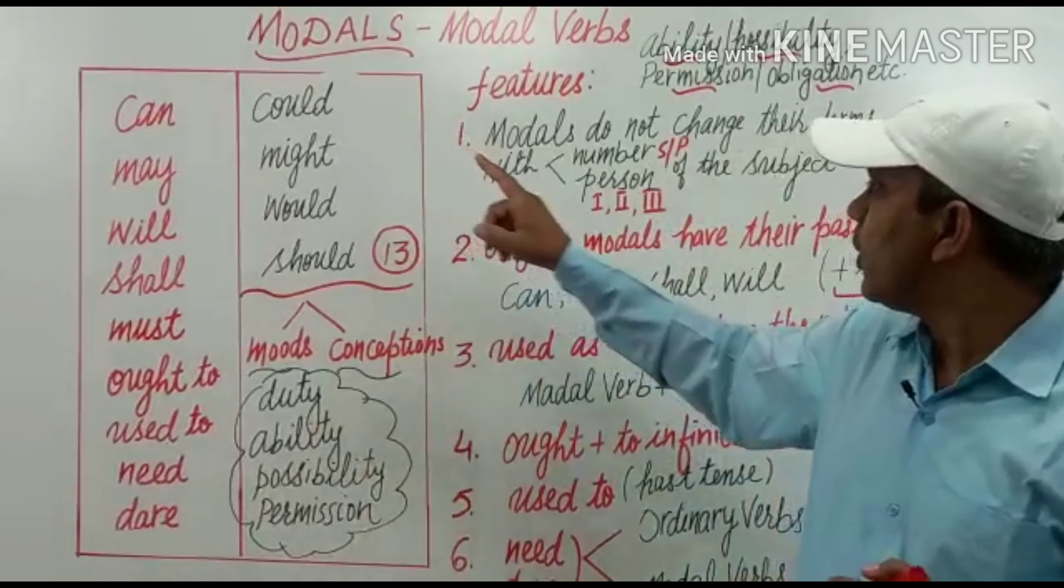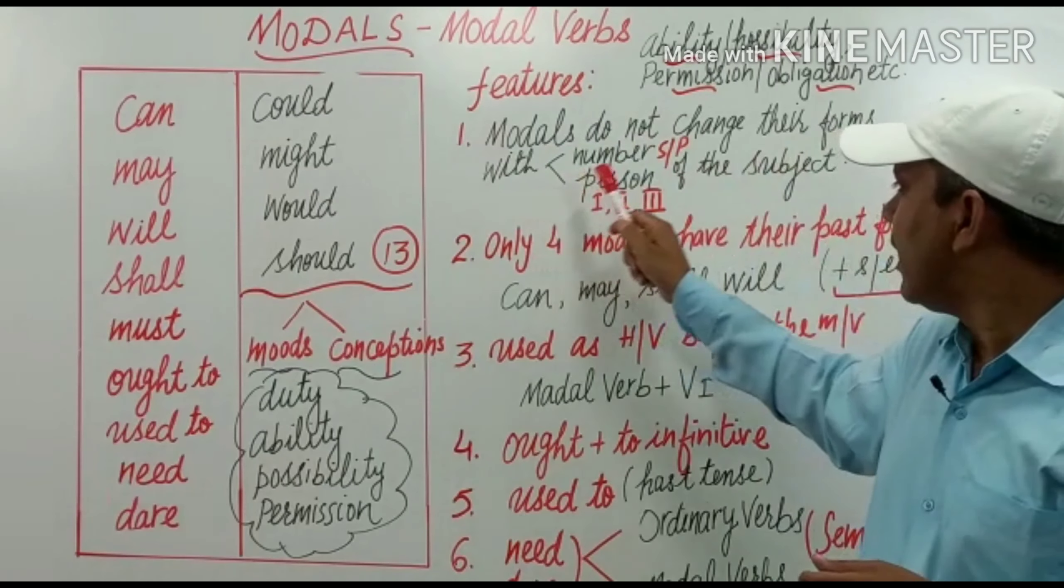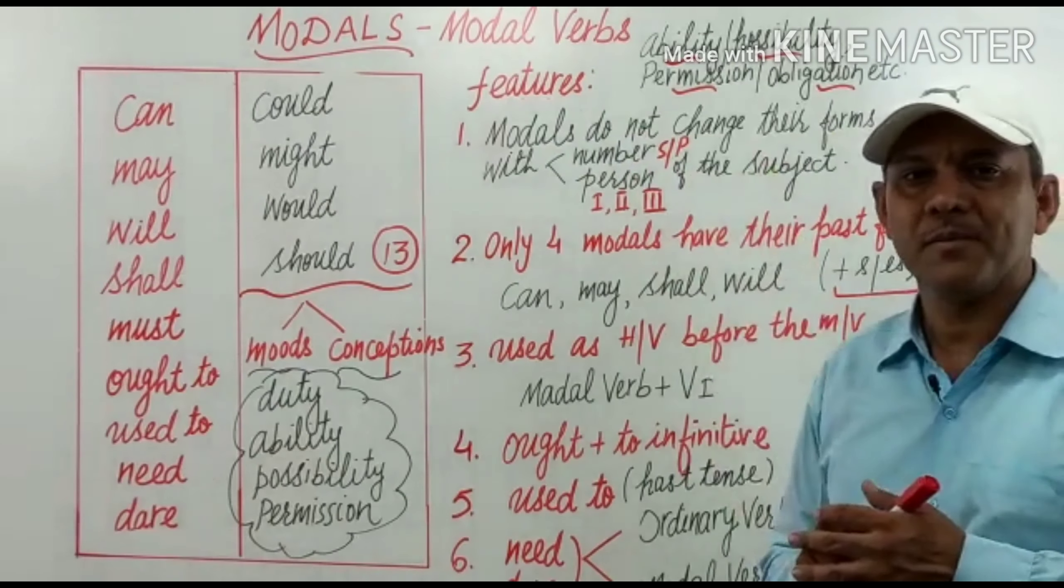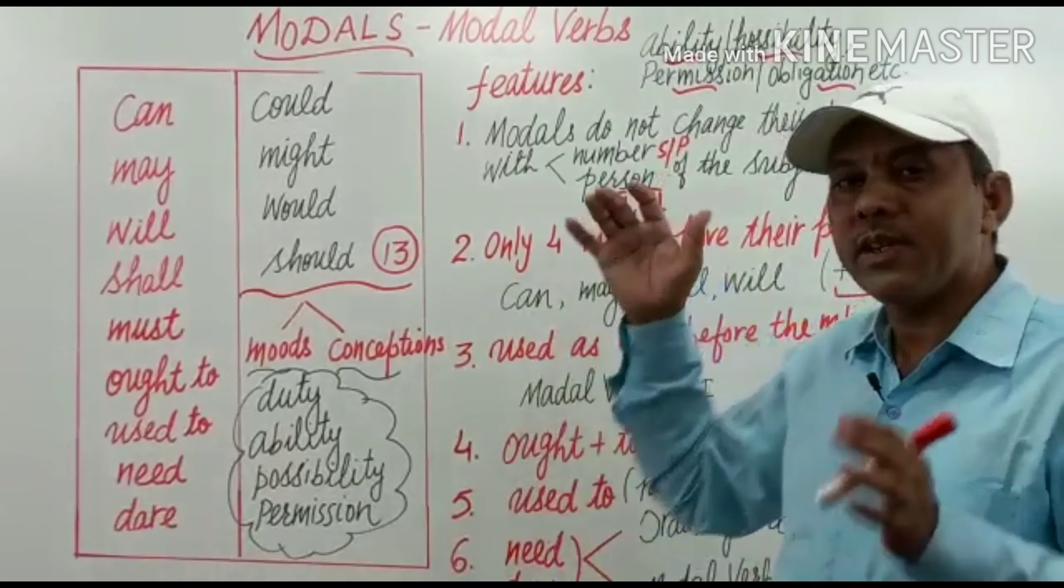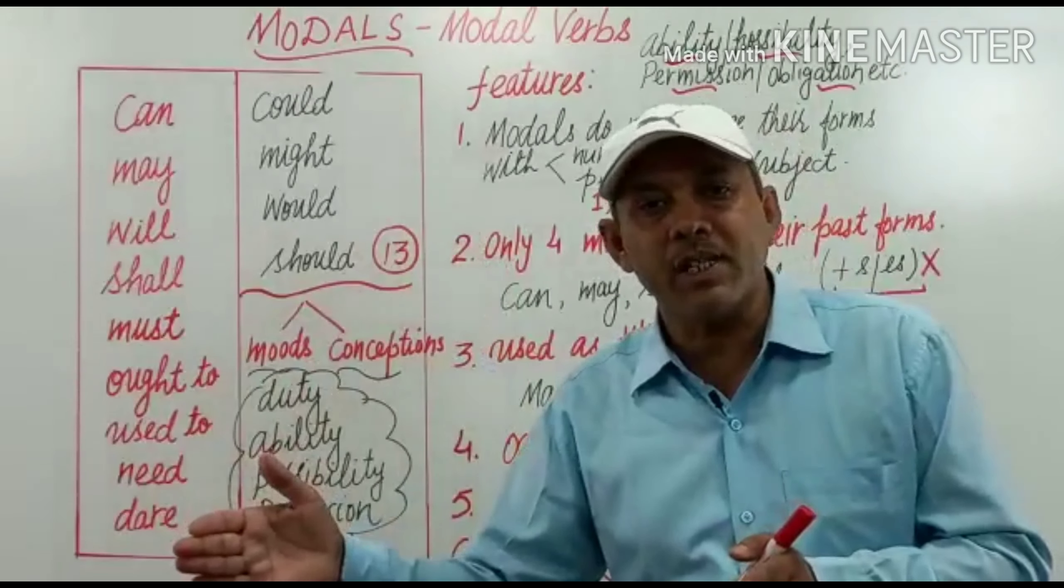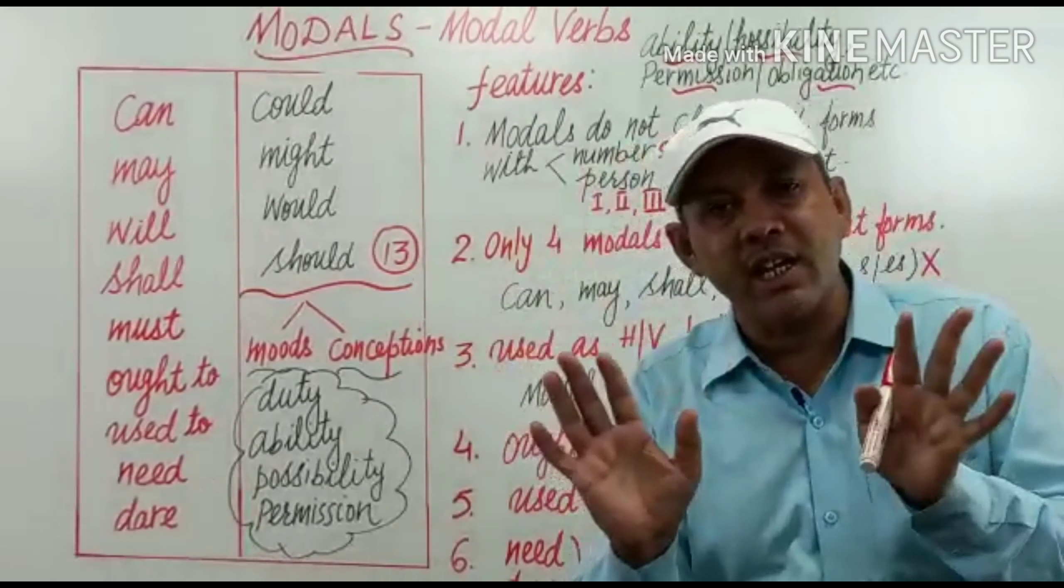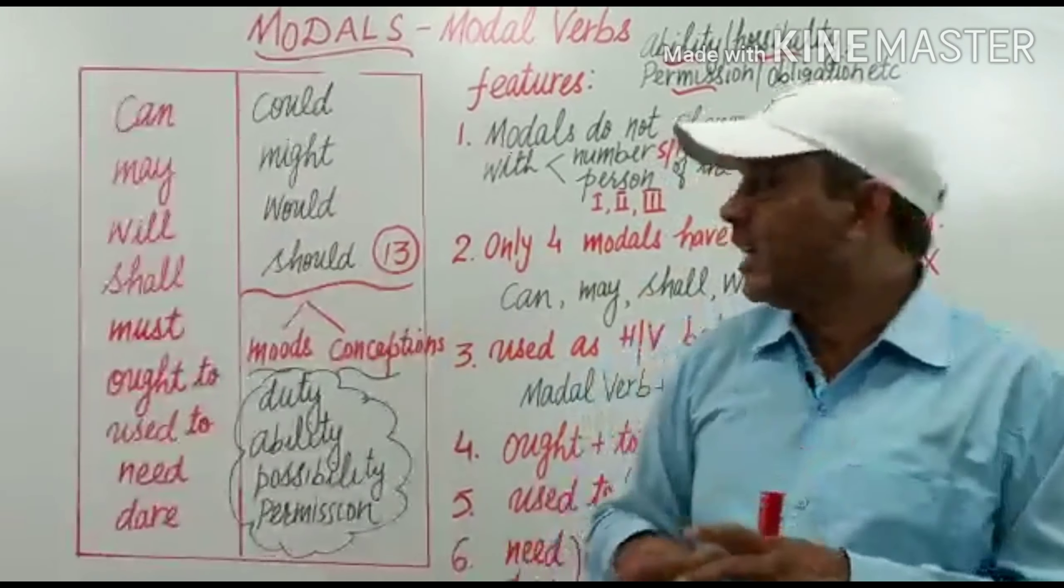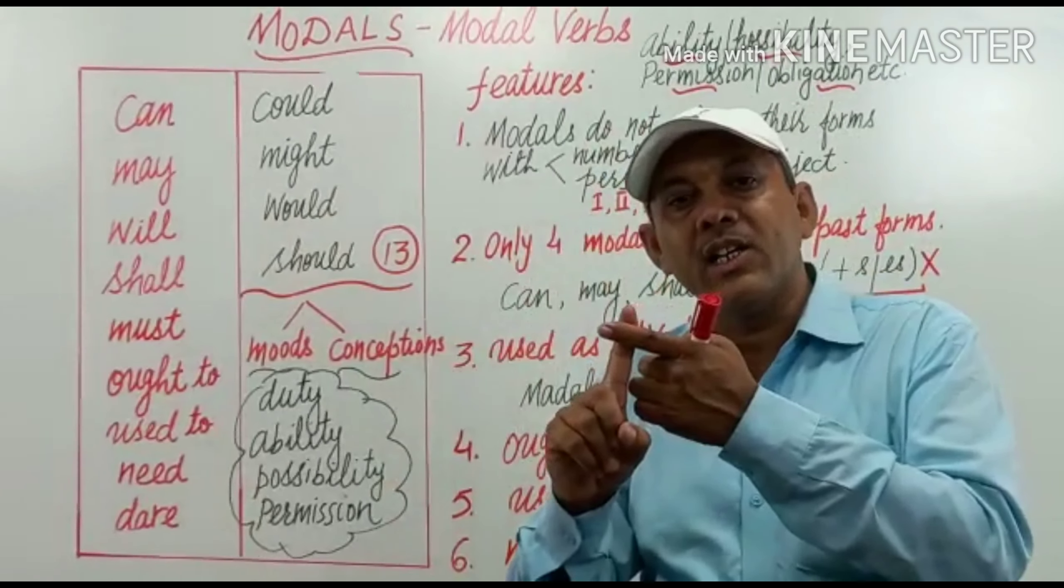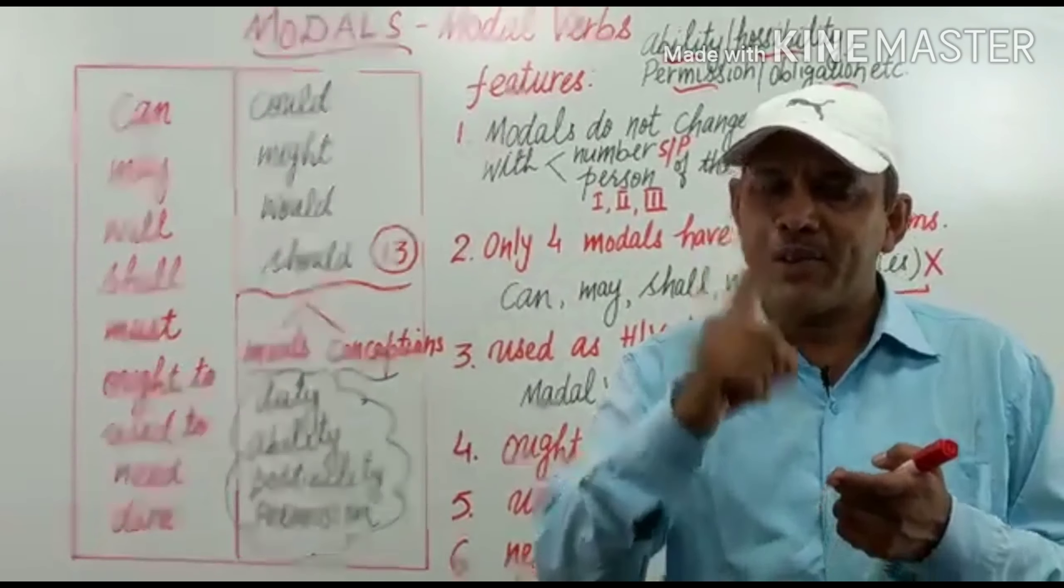What are the features of models? First is models do not change their forms with numbers or persons of the subject. Agar koi sentence liya humne uska subject singular hai, plural hai, it doesn't matter. Uska subject first person hai, second person hai, ya phir third person pronoun hai, it also doesn't matter in case of models. Because models do not change their form with the change in number and person of the subject in a sentence. Yadi sentence mein subject ka number ya phir uska person change ho jata hai, usse model kabhi change nahi hota hai. Ye baat pehli feature hai models ki.